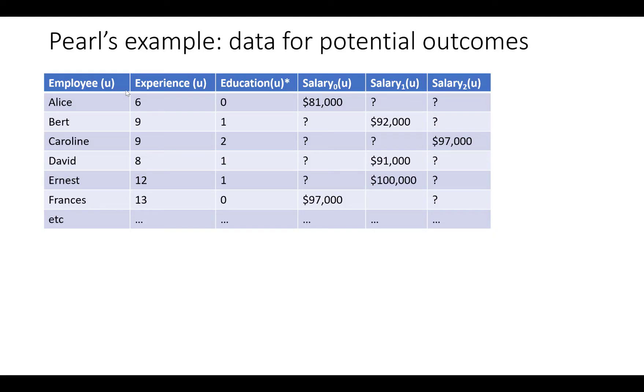We have data on a set of employees. For each we know their number of years of experience, their education level which is assumed to be 0, 1, or 2 corresponding to high school only, college degree max, or graduate degree max, and their current salary. Here salary_i(u) represents the salary that you would have if you had education level i.